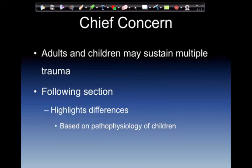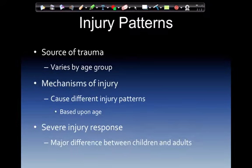Chief concerns: adults and children may sustain multiple trauma. The following section will highlight the differences based on the physiology of children. Injury patterns and source of trauma vary by age group. Mechanism of injury causes different injury patterns based upon the age group — whether they went down and under, or up and over.